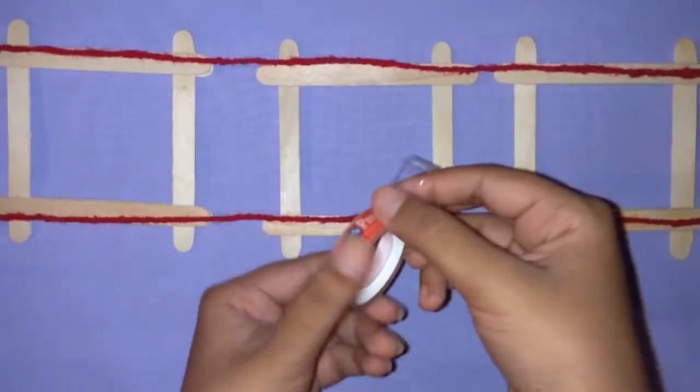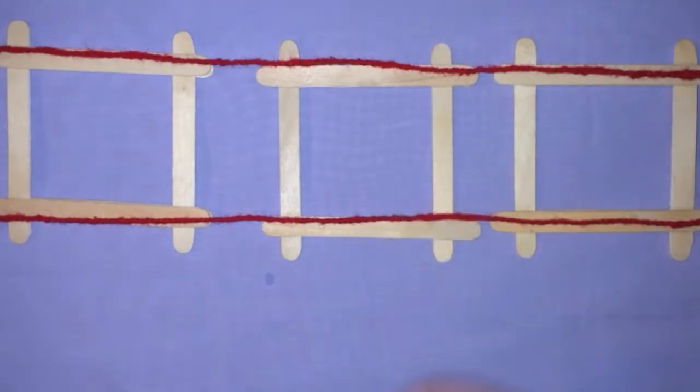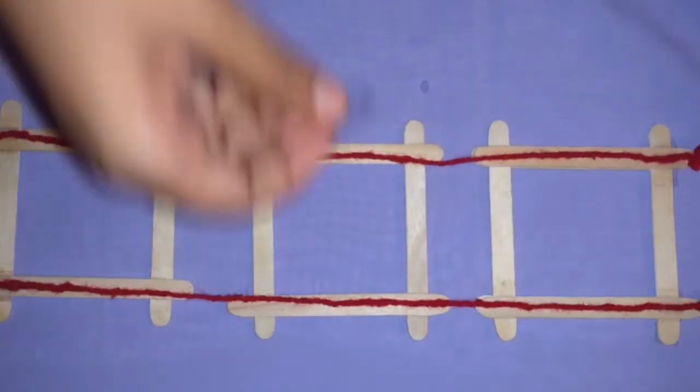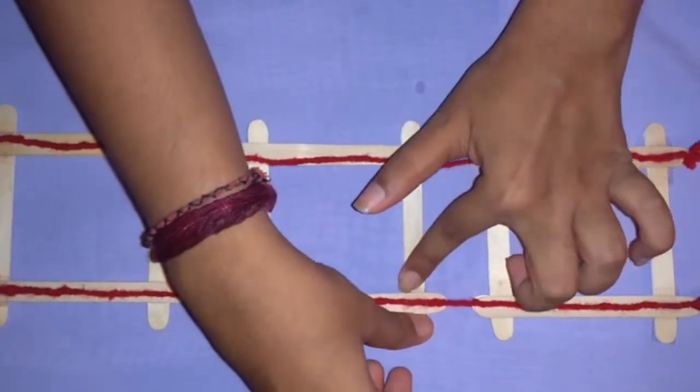Now we'll attach the thread onto the frame using gum tape. Cut the gum tape into small pieces and stick it onto the thread as well as on the frame.